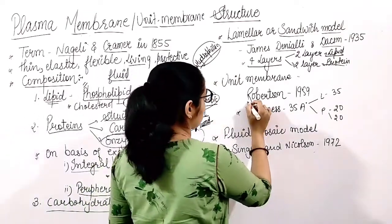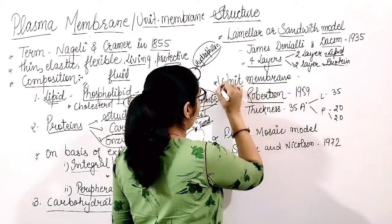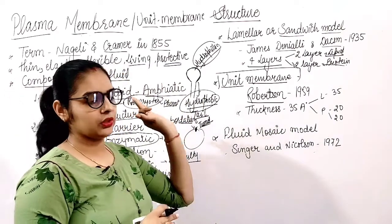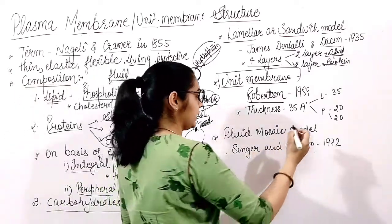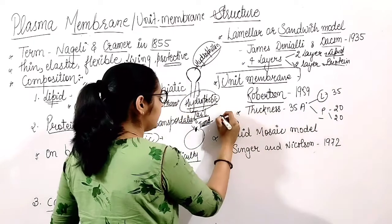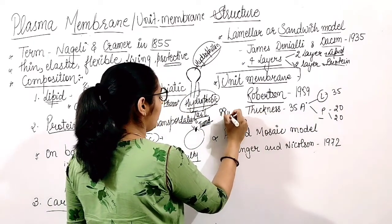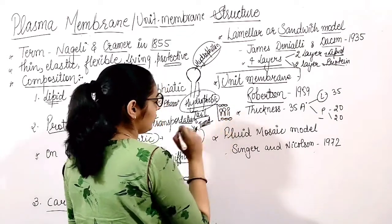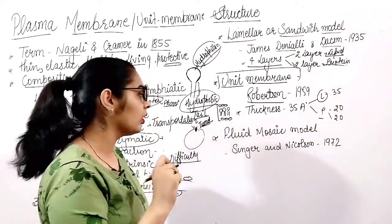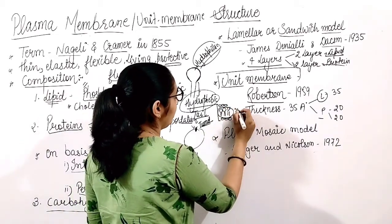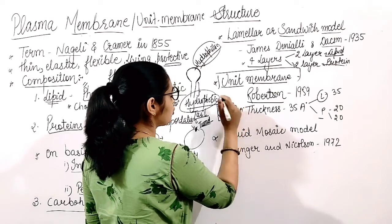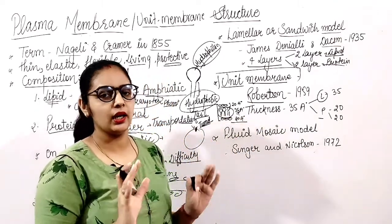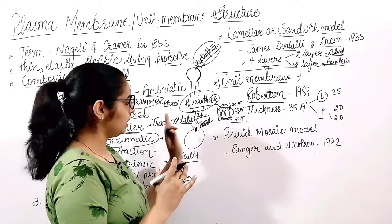Robertson discarded the sandwich model and in 1959 proposed the unit membrane model. He said there are only three layers in the plasma membrane: one lipid layer in the middle and two protein layers on either side. The total thickness of the unit membrane is 75 Ångströms — the lipid layer is 35 Ångströms and each protein layer is 20 Ångströms.